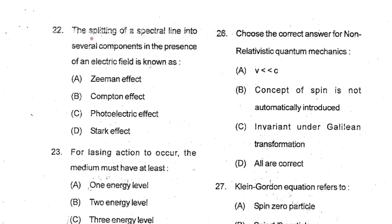Question number 22: The splitting of a spectral line into several components in the presence of an electric field is known as Stark effect. So D is your correct option. In the presence of magnetic field, it is Zeeman effect.